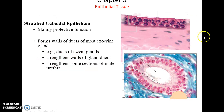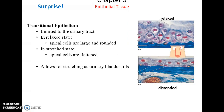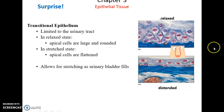Stratified cuboidal epithelium has two or more layers with the most superficial layers being cube-like in shape. It forms some ducts of glands and parts of the male urethra. Stratified columnar epithelium has column-like cells near the surface with two or more layers, forming ducts of some large salivary glands, the male urethra, and the conjunctiva of the eye. Transitional epithelium cells are rounded and cube-like when the organ is relaxed, but stretch out and appear squamous when the organ is distended. They are found only in the urinary system.